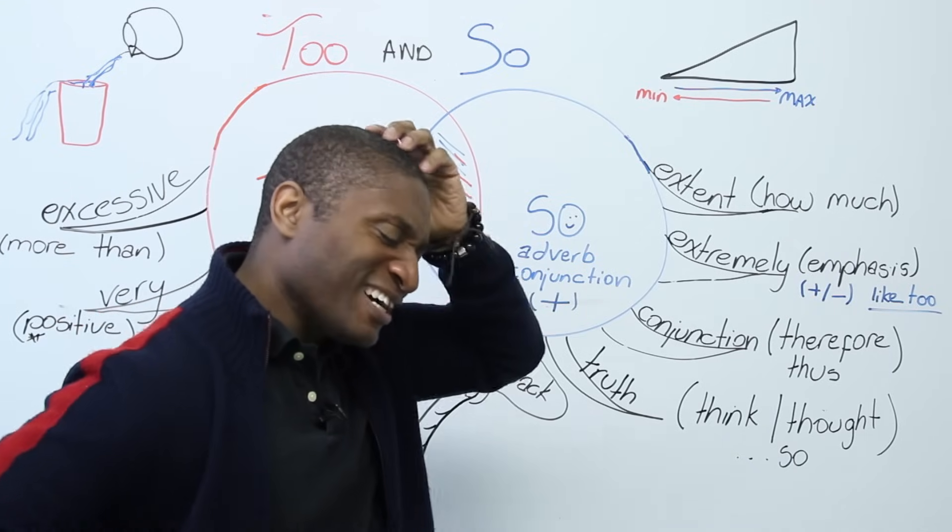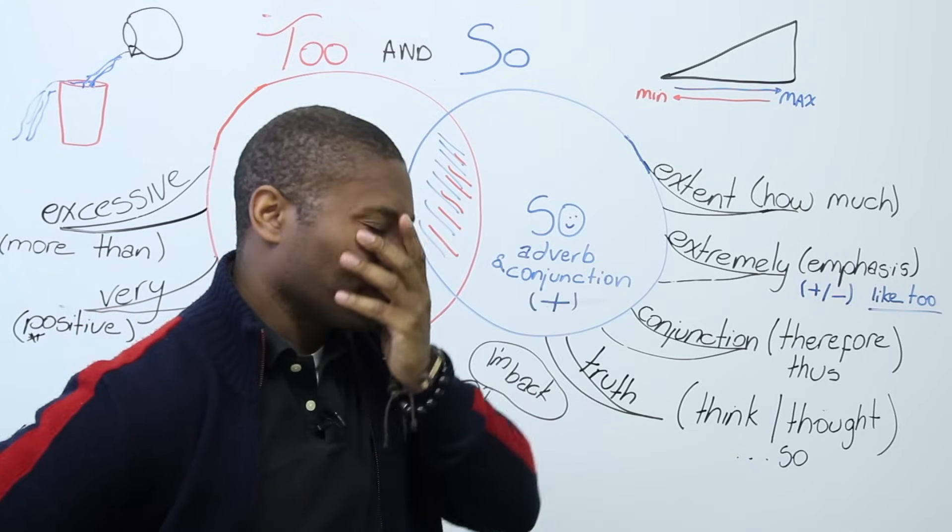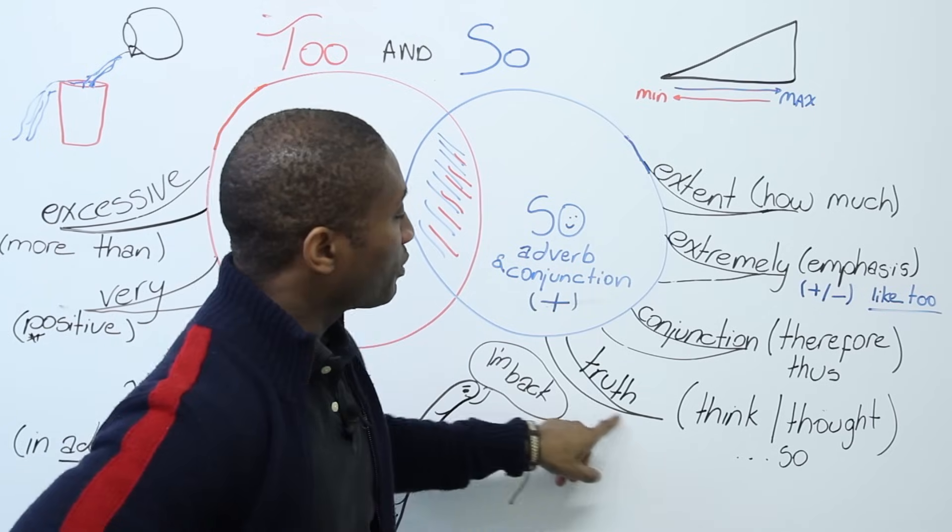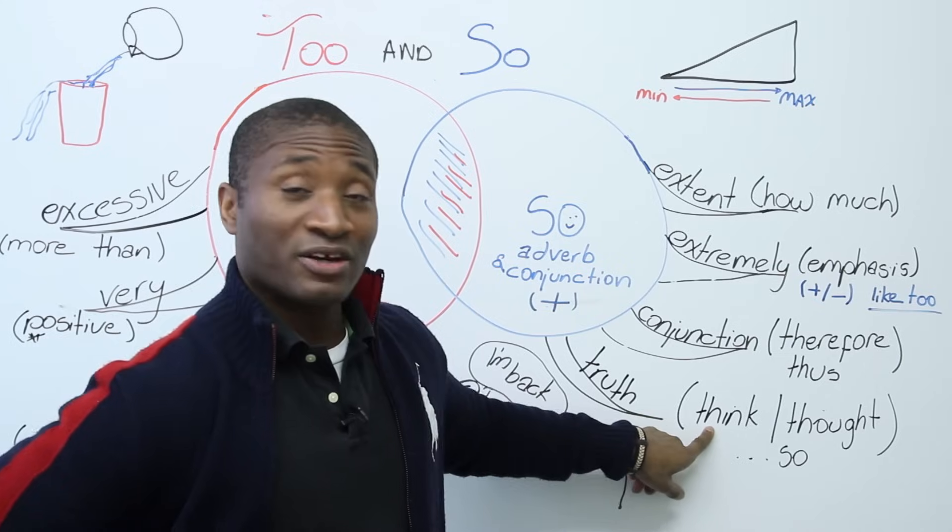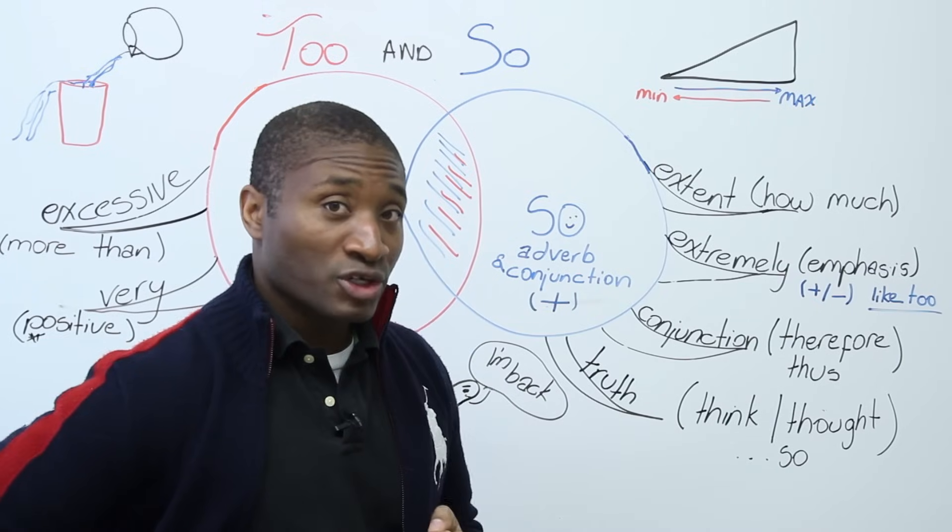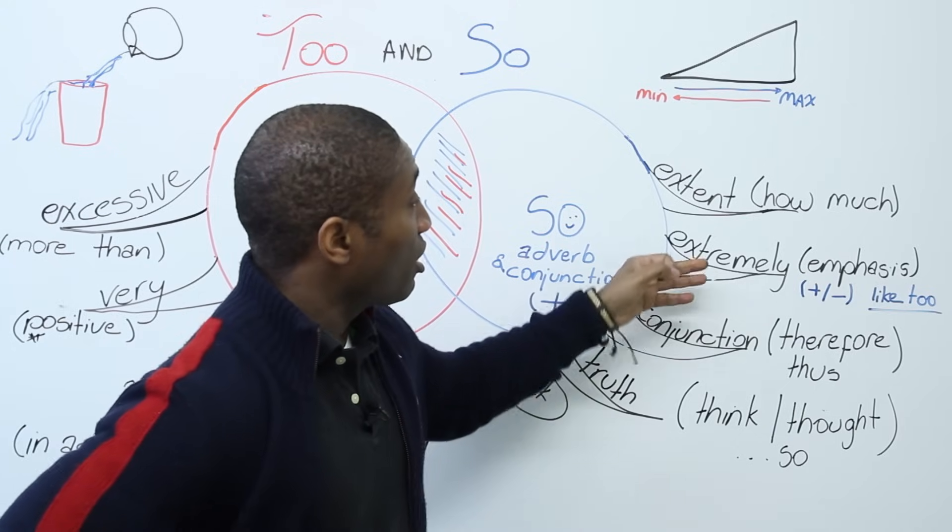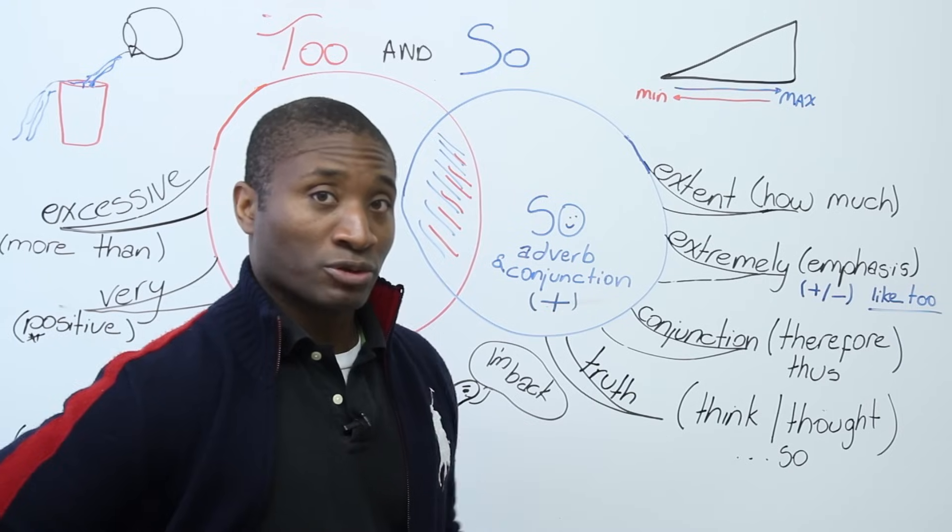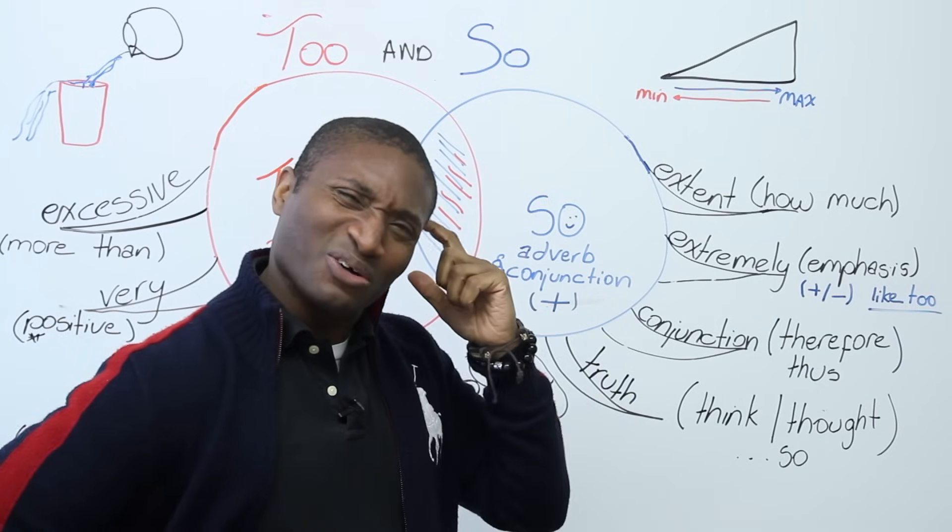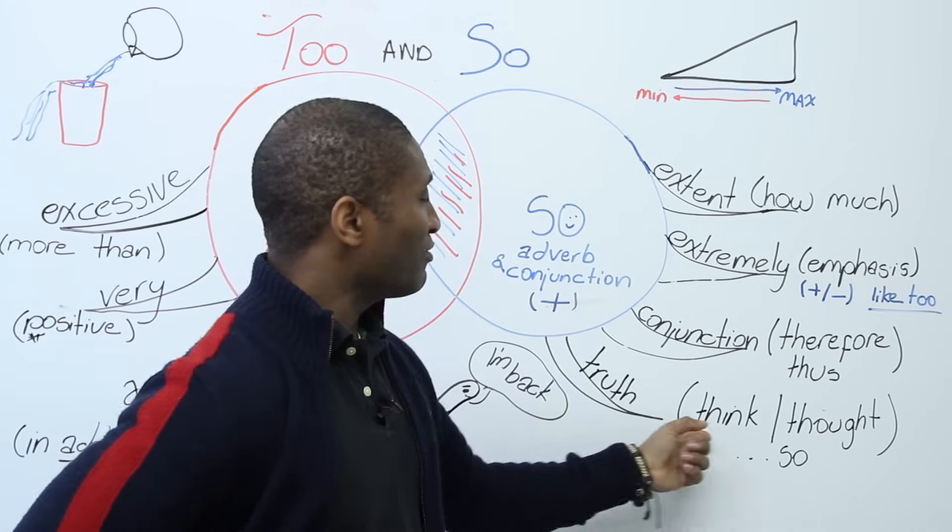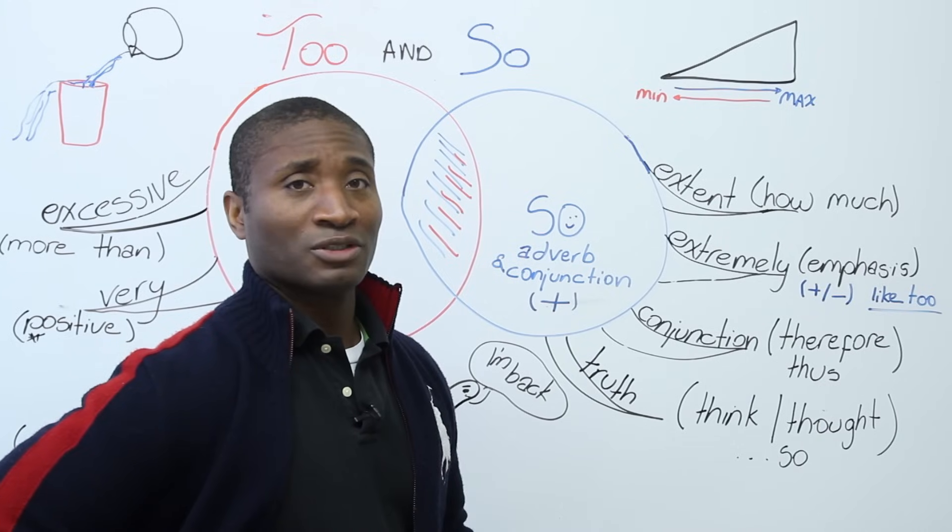And finally, I think this video is over. I think so. No, not quite. But here's the example of truth. A lot of times, you're going to hear Canadians say, I think so or I thought so. And what they're telling you is not conjunction, not extent, not extremely. They're actually trying to tell you, I thought it was true. Was it raining yesterday? I thought so. Did he bring the book? I think so. I believe or I think it's true. Okay?